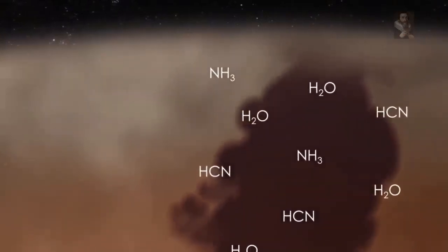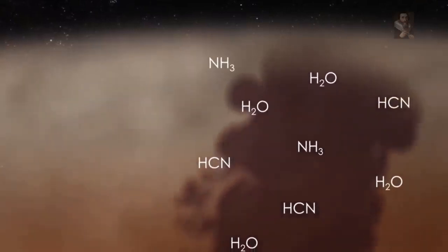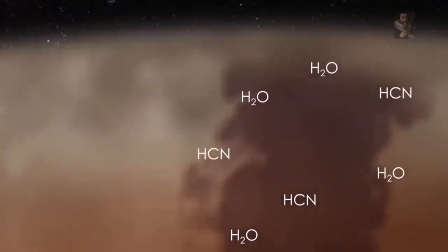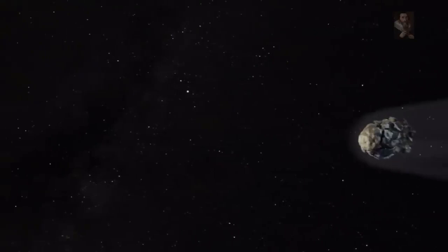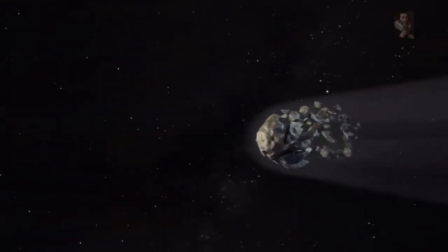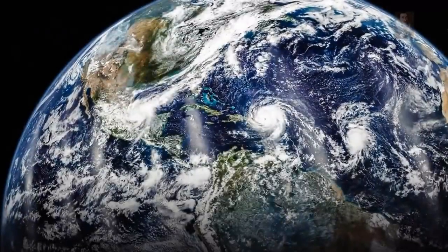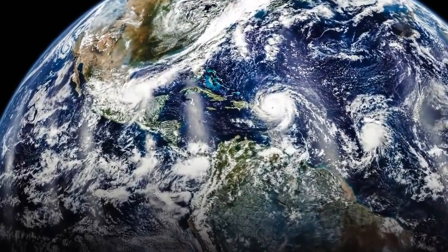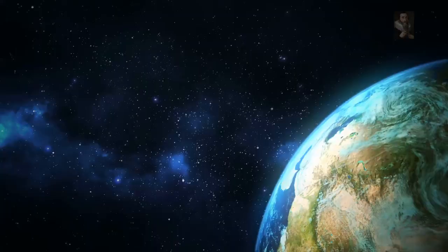Shoemaker-Levy 9 left dark ring scars that were eventually erased by Jupiter's winds. Scientists have calculated that the comet was originally about 1.2 miles wide. If a similar sized object were to hit Earth, it would be devastating.